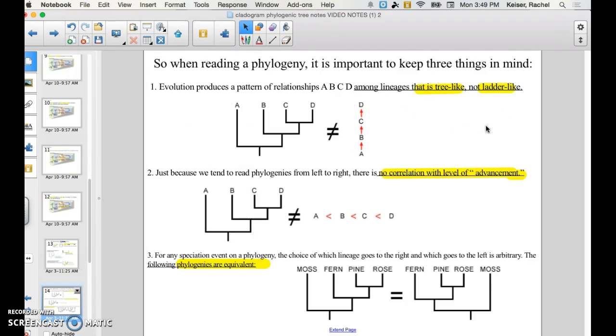It's important to keep a couple things in mind when you read a cladogram. Cladograms are tree-like, not ladder-like. So it's not saying that A evolved into B and then into C and then into D. But rather, A, B, C, and D all share a common ancestor. And over time, certain natural selection pressures branched off these populations into different species.